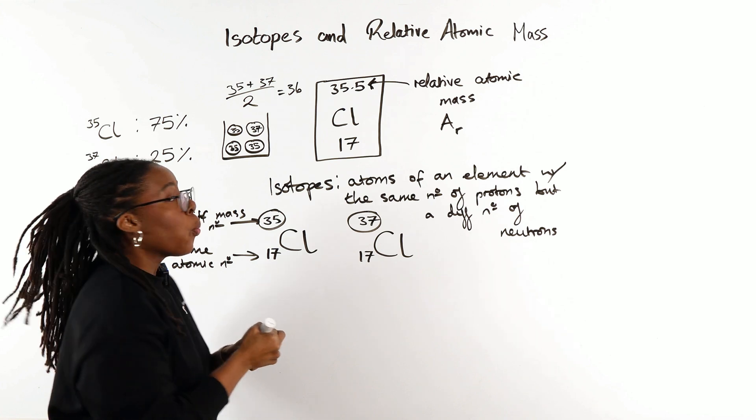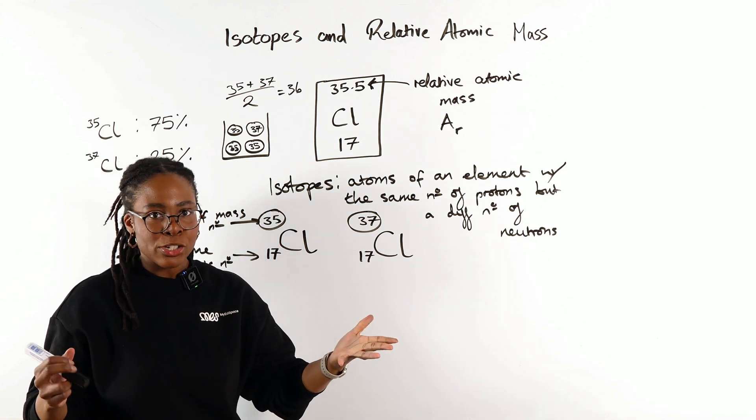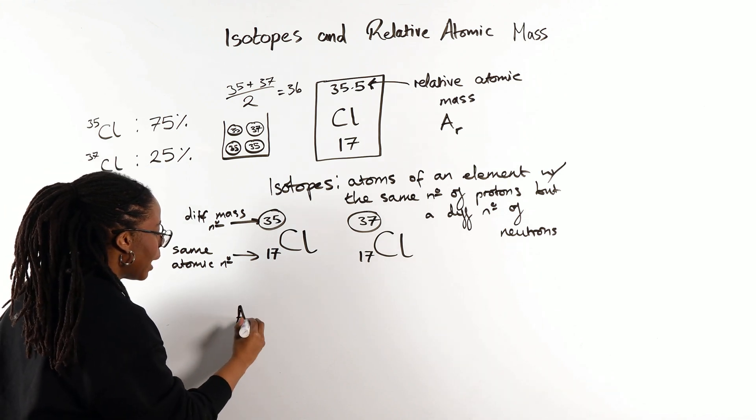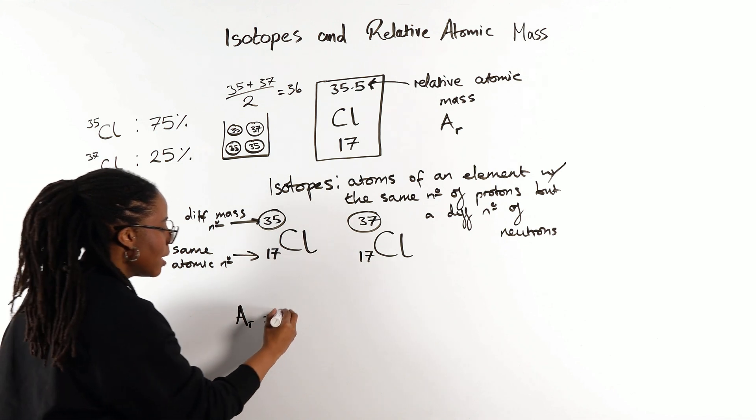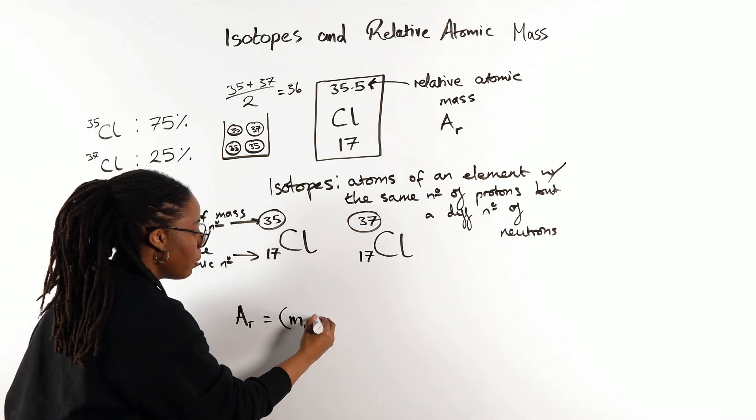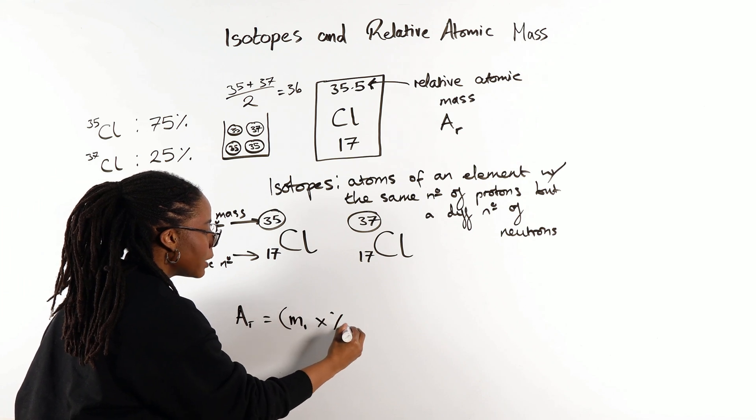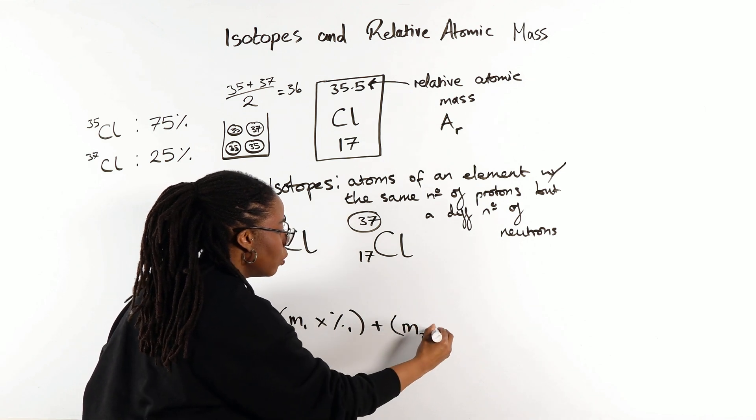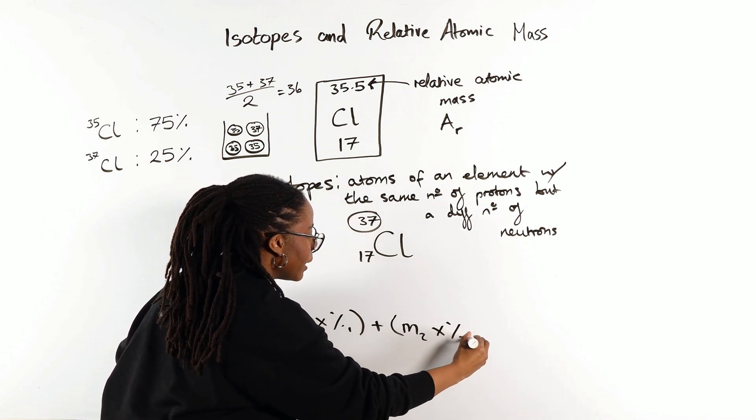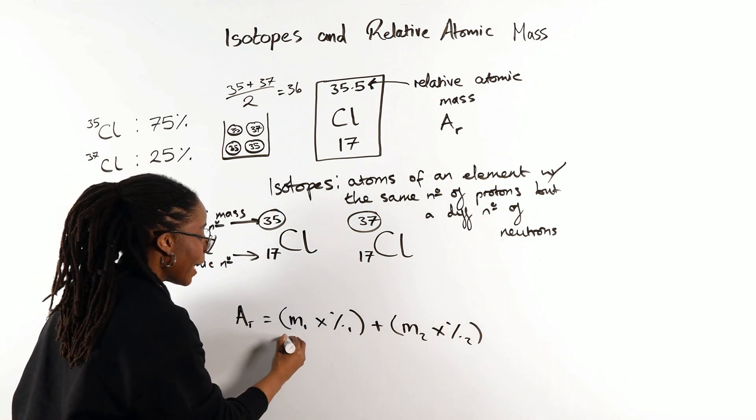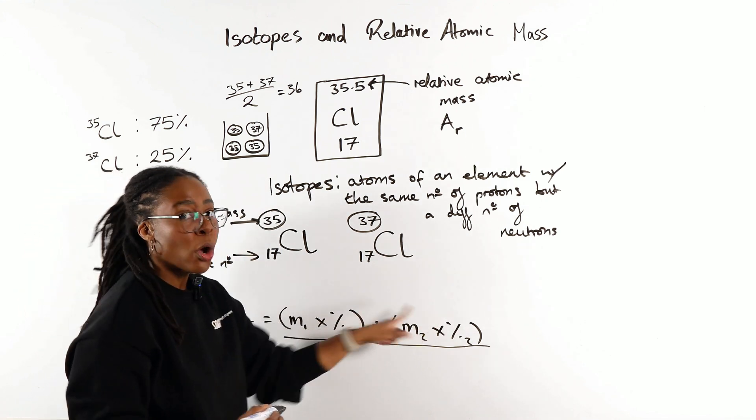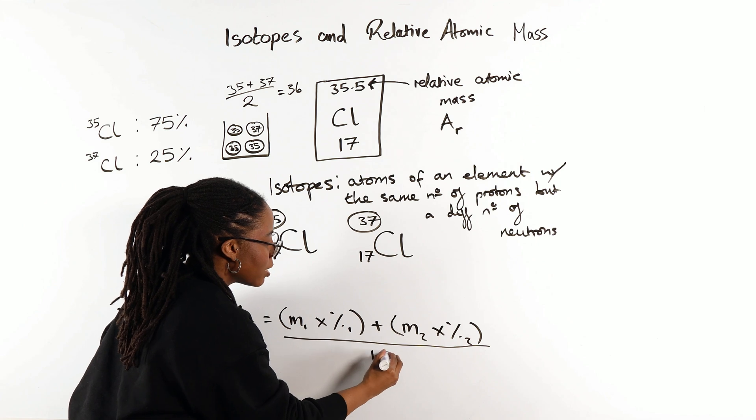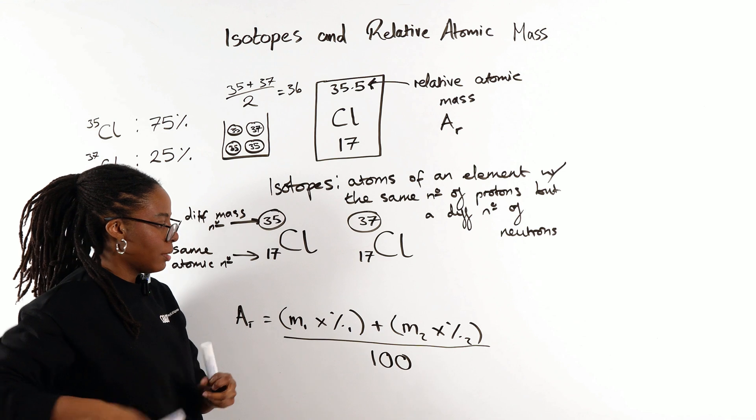Let's clear some space so we can show how this calculation works. Because we need a weighted average, so weighted mean between our two isotopes, we're going to calculate our relative atomic mass as the mass of our first isotope multiplied by its abundance, plus the mass of the second isotope multiplied by its abundance. And then to find the mean, we'll divide that by the total abundance, which in this case, because we're dealing with percentages, is going to be 100%.